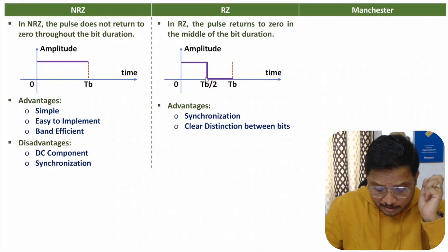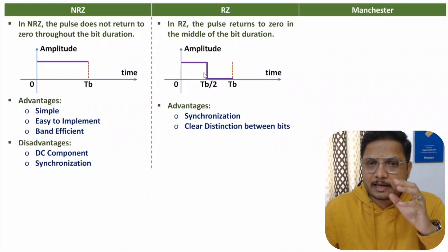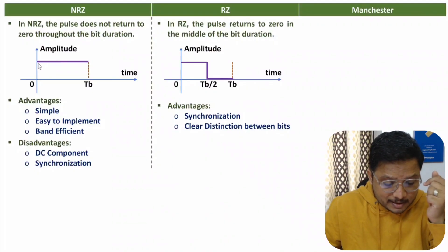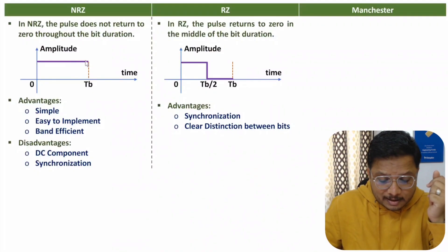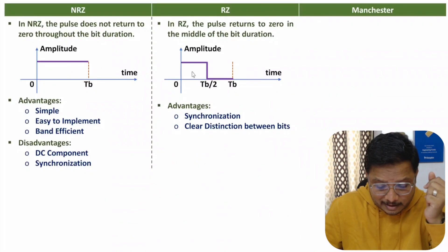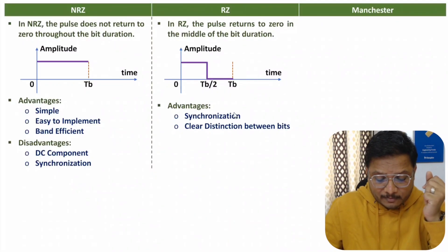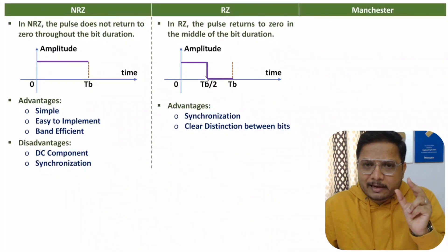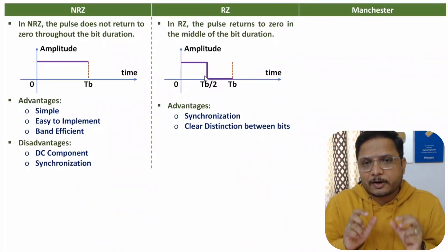The advantage of RZ is better synchronization compared to NRZ. In NRZ there is no transition throughout the pulse, causing synchronization issues. In RZ, there is a transition in the middle of each bit, which provides proper synchronization. There is also a clear distinction between bits — even with a sequence of ones there will be a transition in the middle, resulting in a clear difference between two consecutive ones.